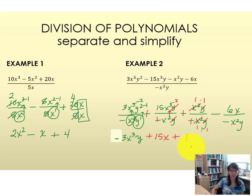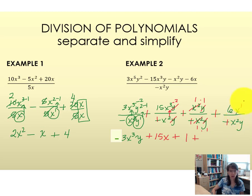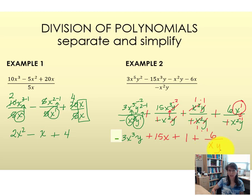For the last term, subtraction and a negative denominator gives plus. The coefficient is 6. For bases of x, x to the 1 is in the numerator and is lower than x squared in the denominator, so x shifts down with minus 1. There is only one base of y and it's in the denominator. So this last term is a fraction: 6 over xy. The final answer is negative 3x cubed y plus 15x plus 1 plus 6 over xy. I hope you found this helpful.